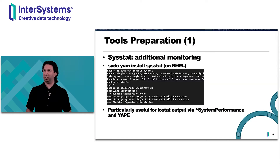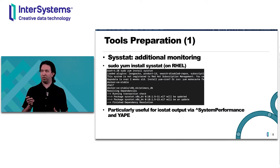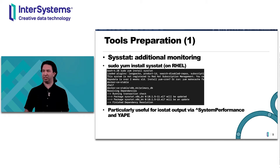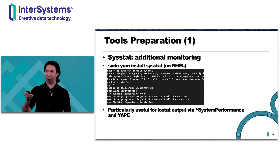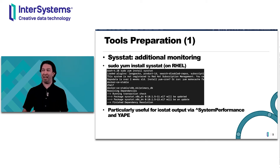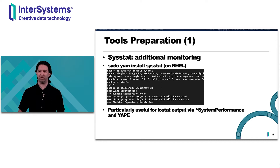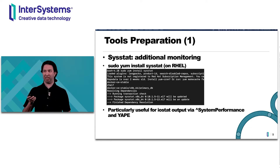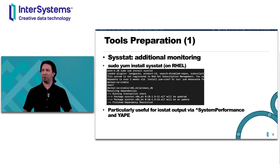For the quick demo, first we'll talk about prepping everything. You want to get SYSTAT on your system in order to get IOSTAT output from System Performance in Yape. The command is shown, and you can see how it's run. You don't have to have this, but if you want the IOSTAT output you need to have it running on your system. The command listed is just for Red Hat, but you can Google it for other operating systems.